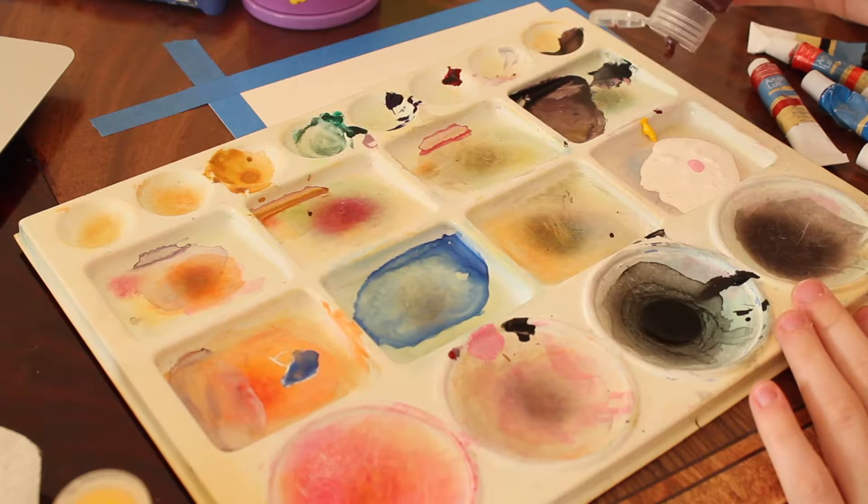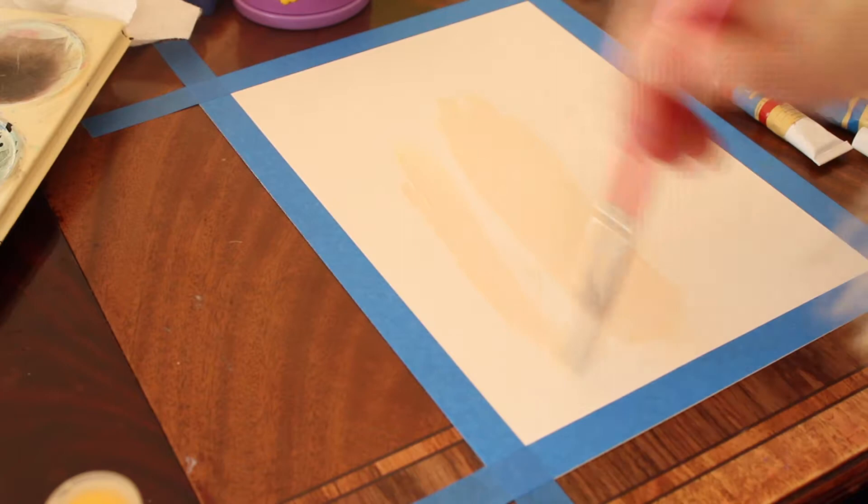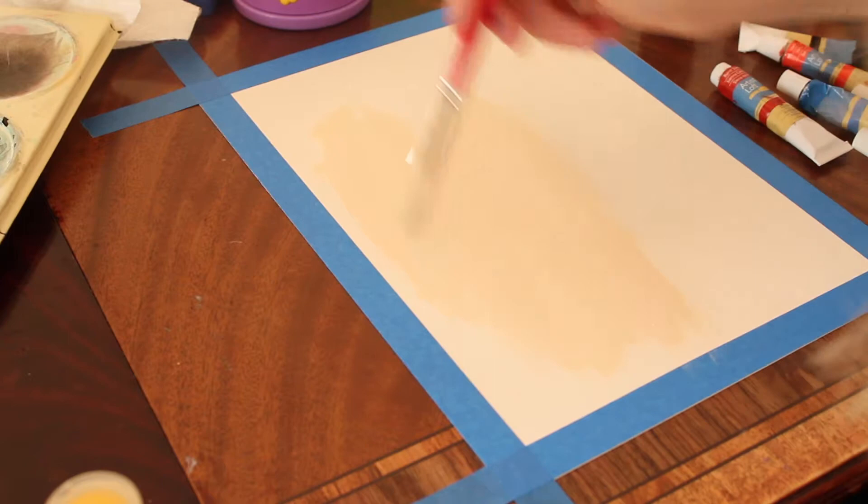I only used a tad bit of crimson yellow and an even smaller amount of brown. I mixed it all into this kind of tan color because it's actually a creamy tan background, not just white.